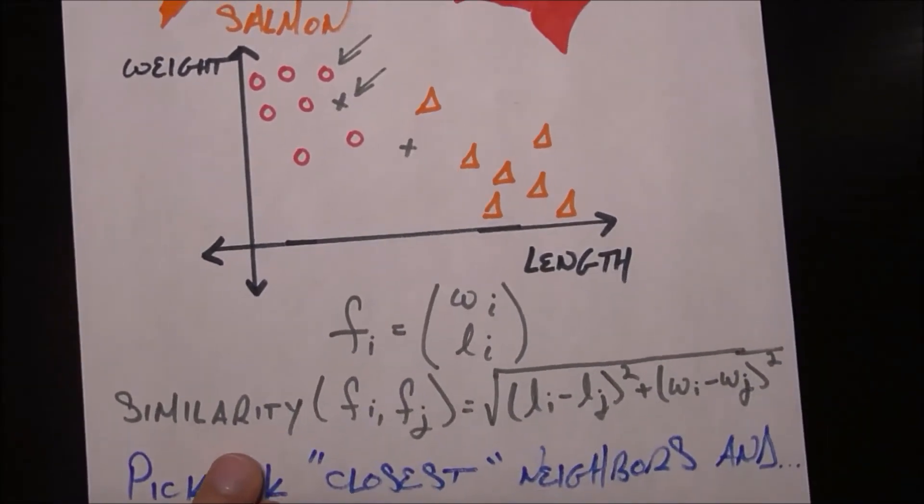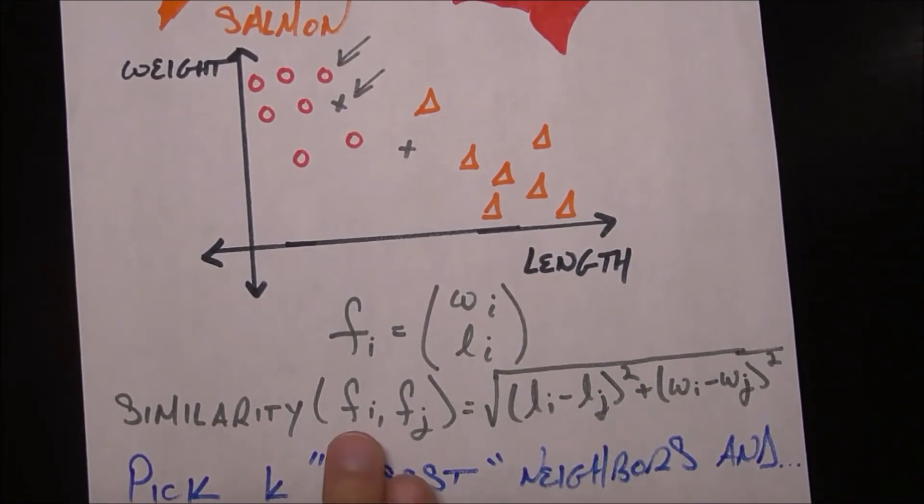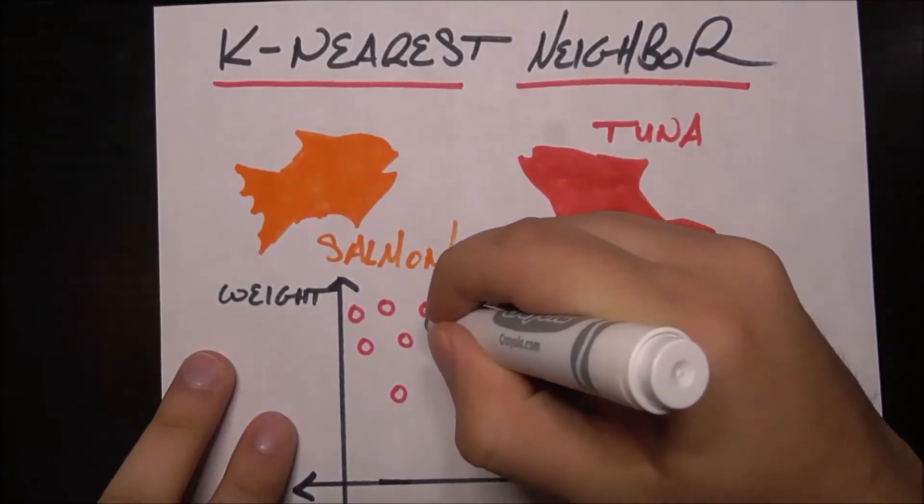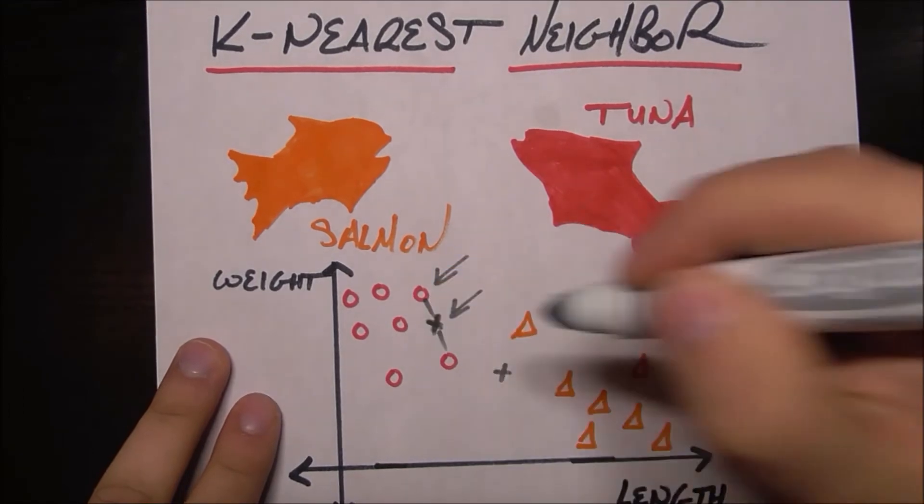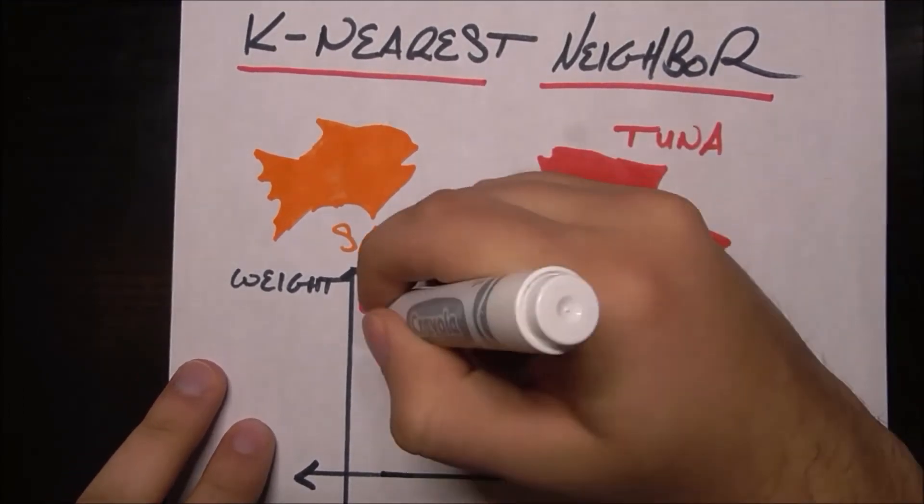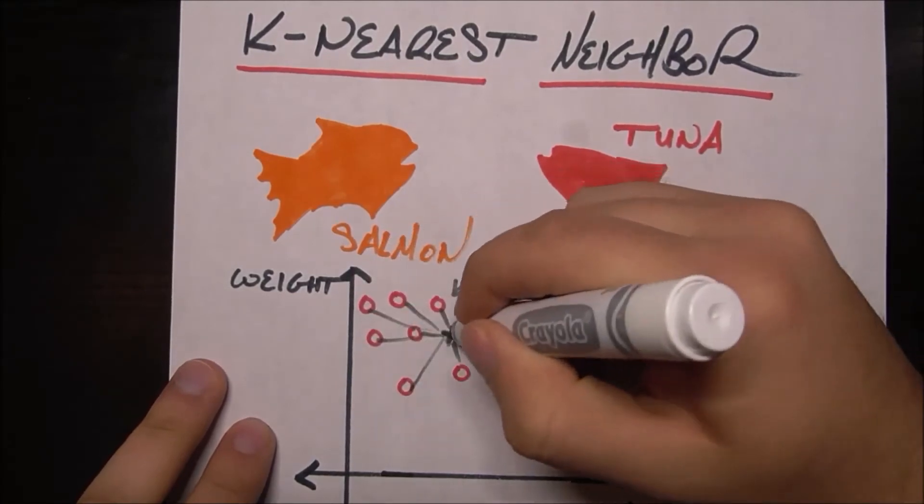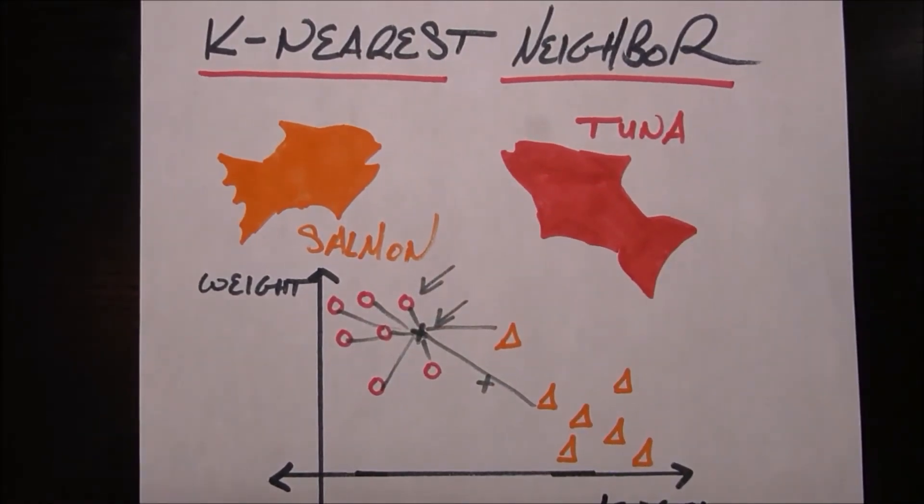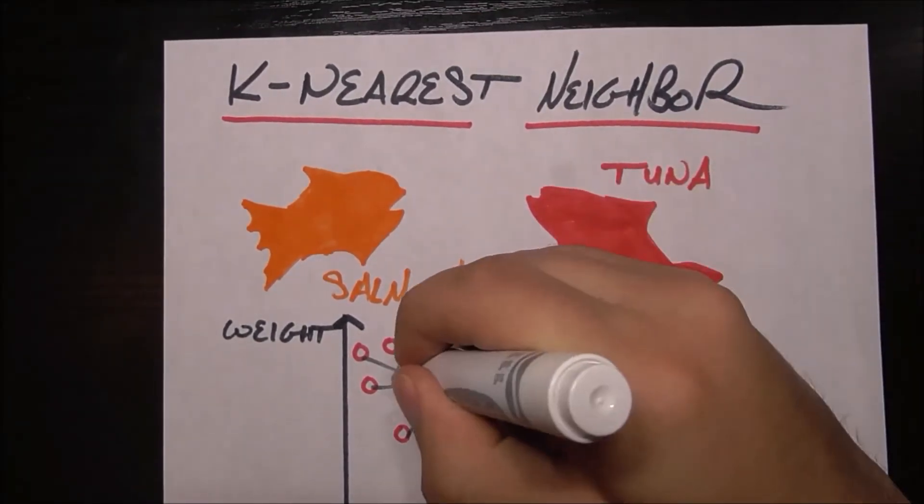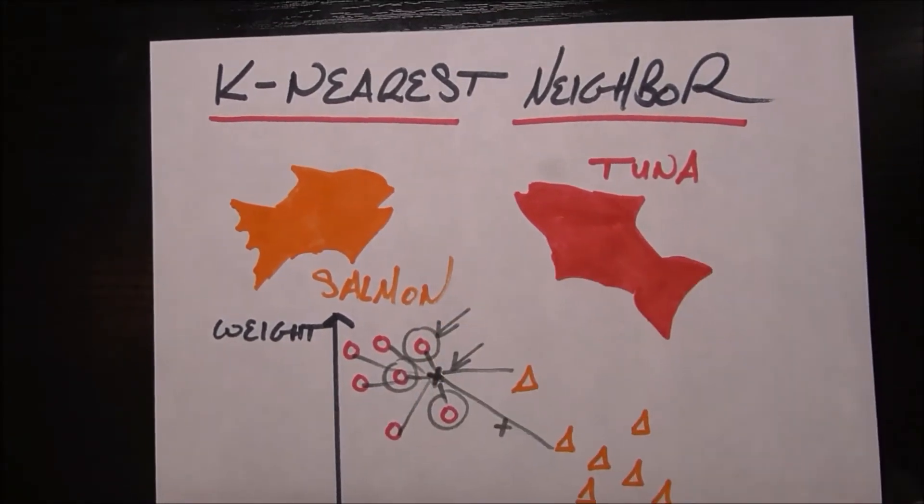So that's going to be our similarity between mystery fish i and known fish j. If we calculate that distance between mystery fish here and this guy, we're going to find that distance is really small. We can find that distance for every single other fish in here, including all these salmon, and basically ask who are your three or five closest neighbors. If we use the three closest neighbors, we find out it's this guy, this guy, and this guy probably.